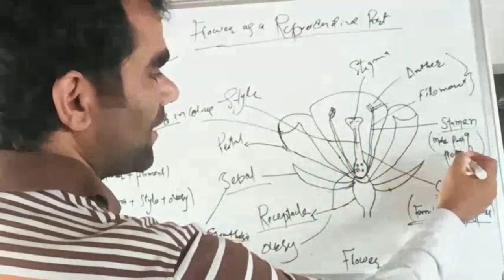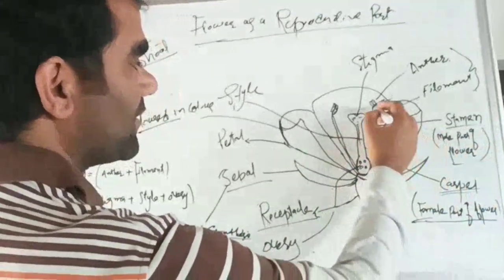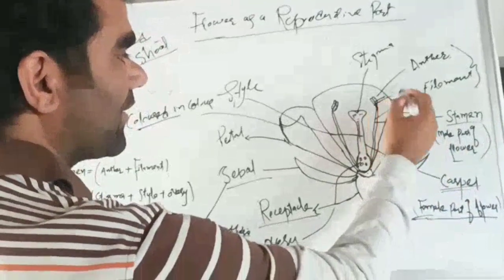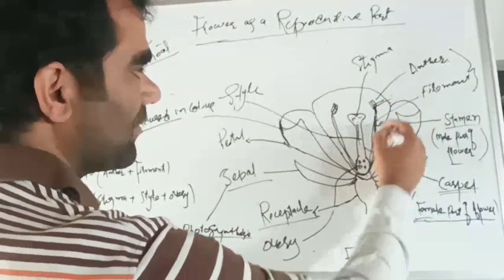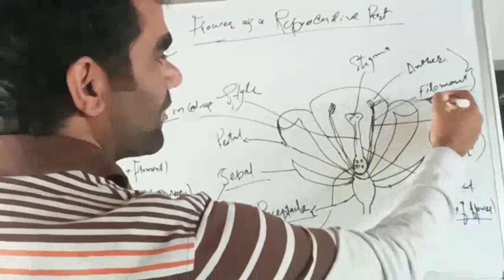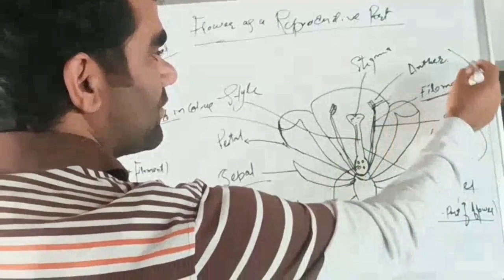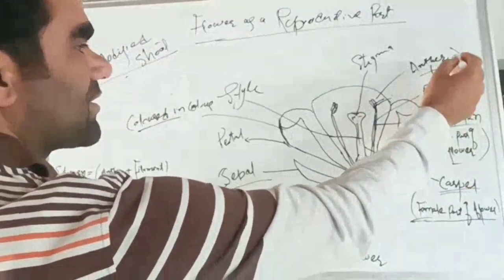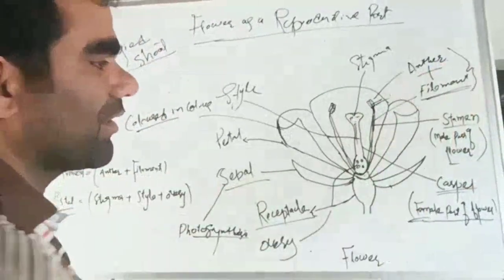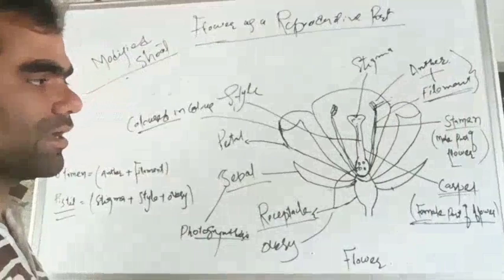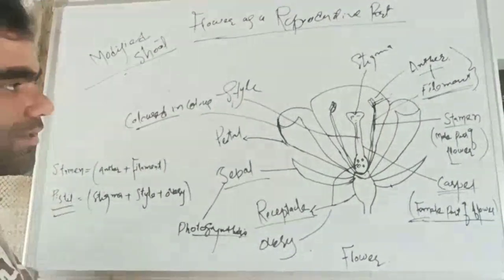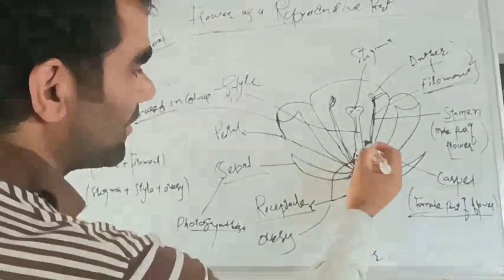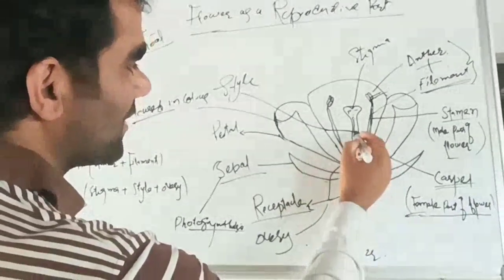After that there is the male reproductive part of the flower known as the stamen. Stamen consists of the anther and the filament. This is the anther and this part is the filament. Together they are known as the stamen — the male reproductive part of the flower.